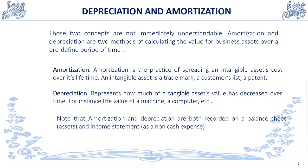More important and more common is depreciation. This represents how much a tangible asset's value has decreased over time — for instance, the value of a machine or a computer. Suppose you buy a computer for 1,000; the next year you sell it for 800 — the depreciation would be 200. Note that both amortization and depreciation are recorded on the balance sheet on the asset side and on the income statement as a non-cash expense.